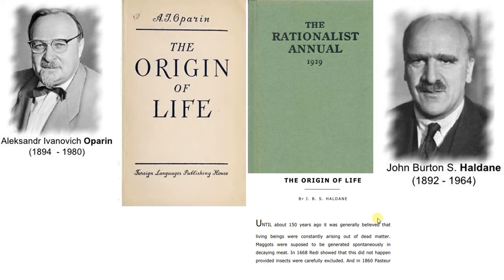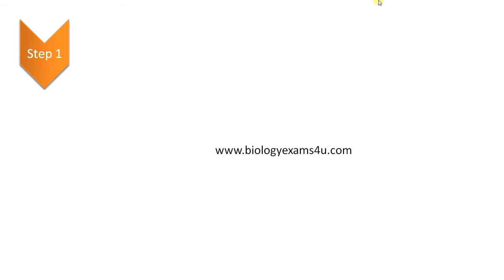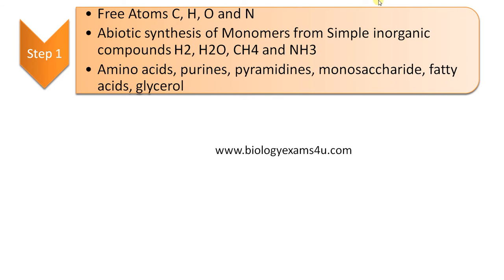Let us divide this theory into five steps. Step one: free atoms — carbon, hydrogen, oxygen, and nitrogen — combined to form simple inorganic compounds like hydrogen, water vapor, methane, and ammonia, which later combined to form monomers of present-day biomolecules: amino acids, purines, pyrimidines for nucleic acids, monosaccharides for carbohydrates, and fatty acids and glycerol for lipids. Step one is the formation of organic compounds from simple inorganic compounds.